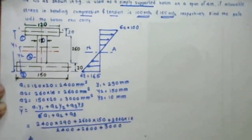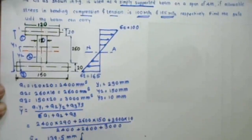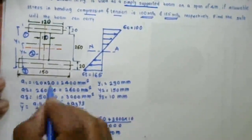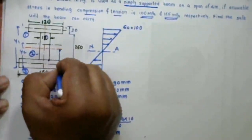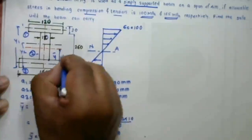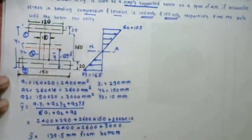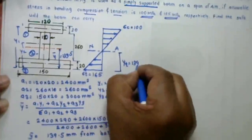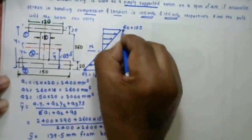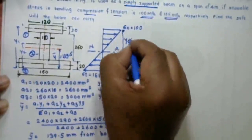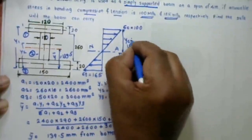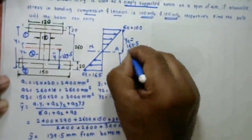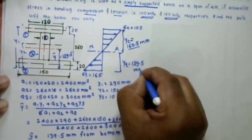ȳ = 139.5 mm from the bottom side. Therefore yt = 139.5 mm and yc = 160.5 mm.